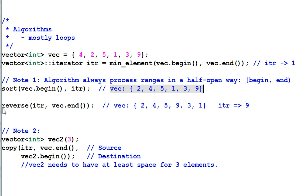Now I call the function of reverse on iter to vec.end. Iter is pointing to 1, so 1 is included. Vec.end is pointing to the item after the last item. So the range is 1, 3, 9. So the result is this. And at the end, the iter is not pointing to 1 anymore. It's pointing to the old location where 9 is located.